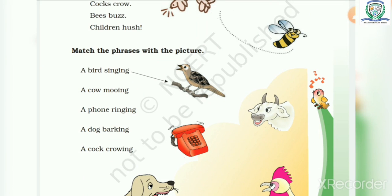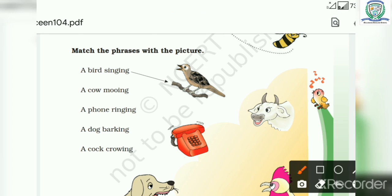A bird singing. Toh usay bird ki picture ke saath match kiya gaya hai. Next is a cow mooing. Usay hum cow ki picture ke saath match karenge. Phir hai a phone ringing. A dog barking. Or last may hai a cock crowing.